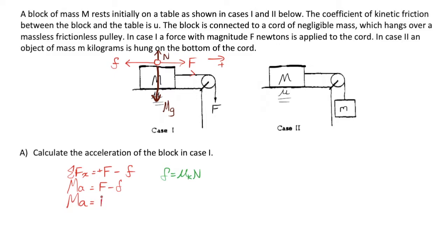Uppercase Ma equals F minus mu k n. But the normal force in this case is in equilibrium with the gravitational force. I could prove that by saying that the sum of forces in the y direction, which is known to be equal to zero because it's not accelerating in the y direction, must be equal to n minus Mg, if I decide to call the up direction positive. Therefore, clearly the normal force is equal to Mg, as it is in many of the cases where you're on a flat surface. So I can make that substitution too.